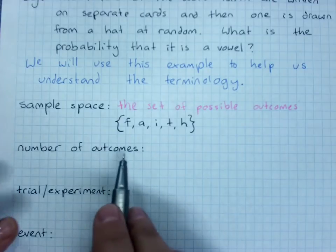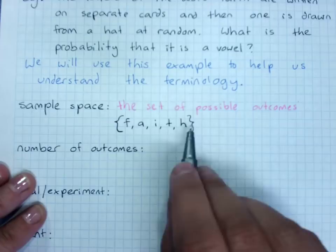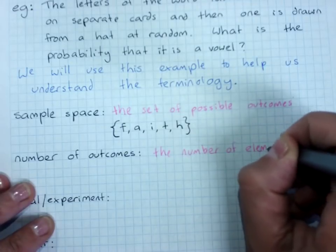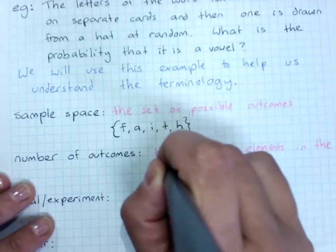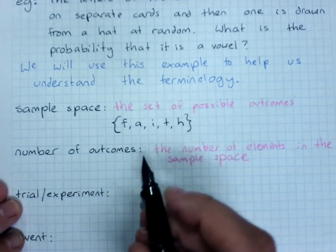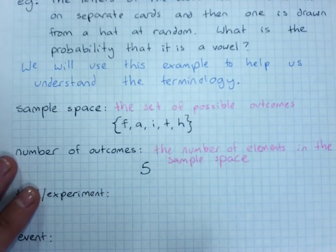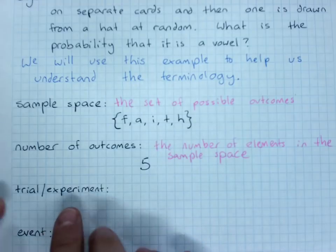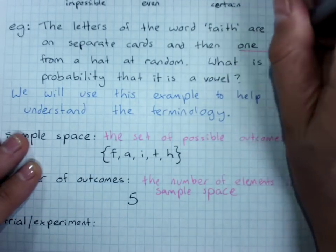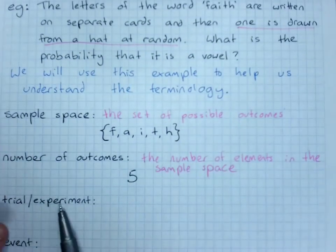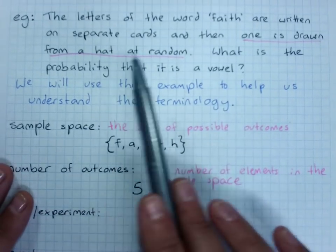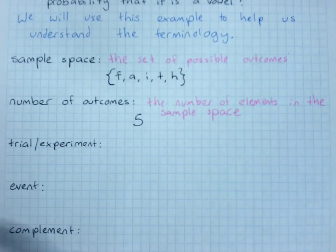The number of outcomes is just the number of things or elements in the sample space. So the number of outcomes here is five. Now a trial or an experiment - the experiment is the thing that the person did, so that is drawing a letter from a hat at random. Often the trial or the experiment is rolling a die or spinning a spinner or flipping a coin or choosing a number.